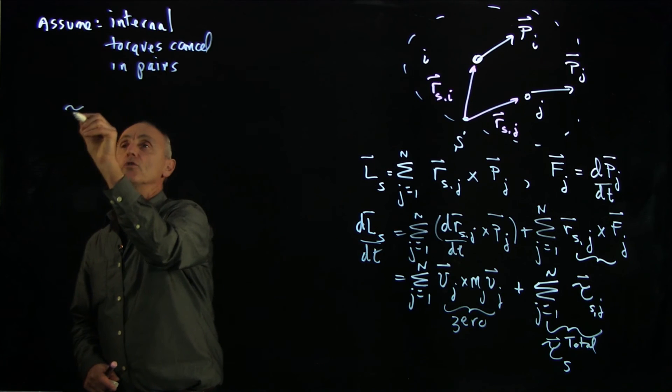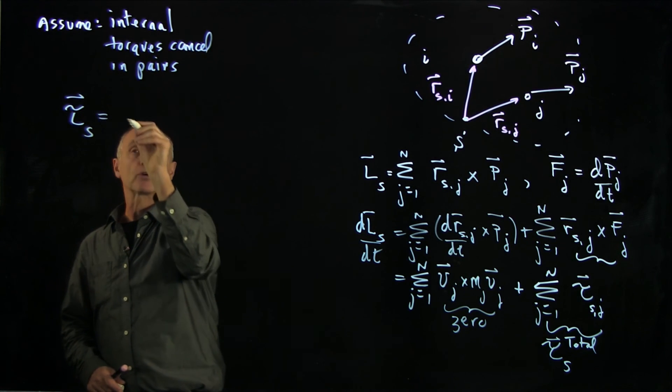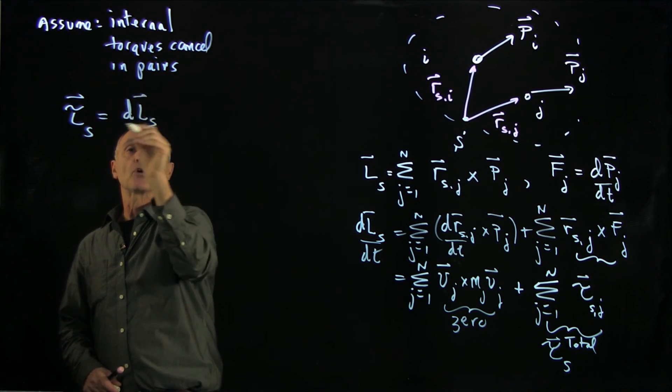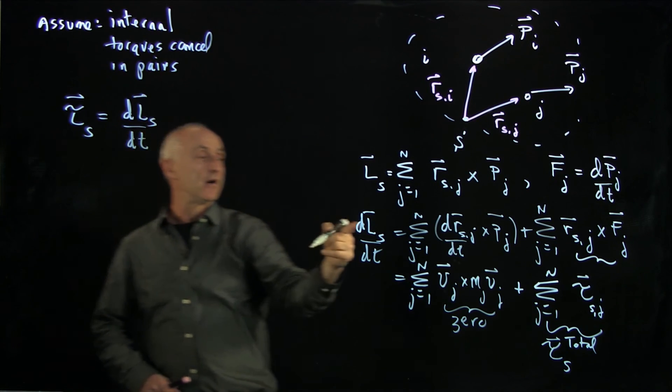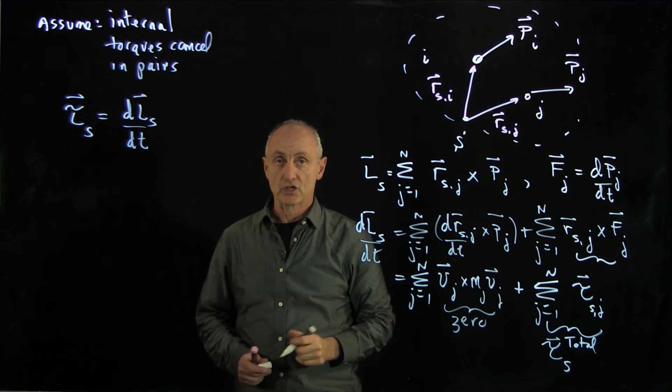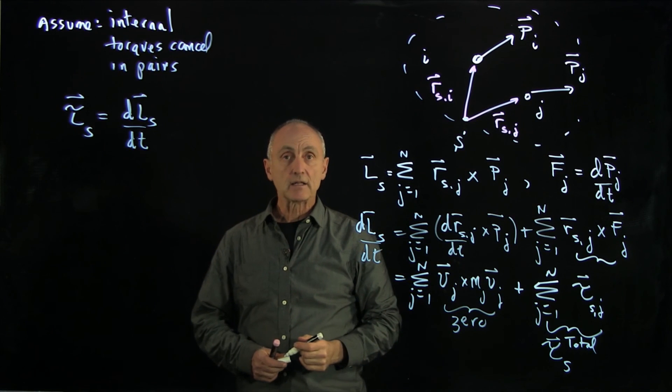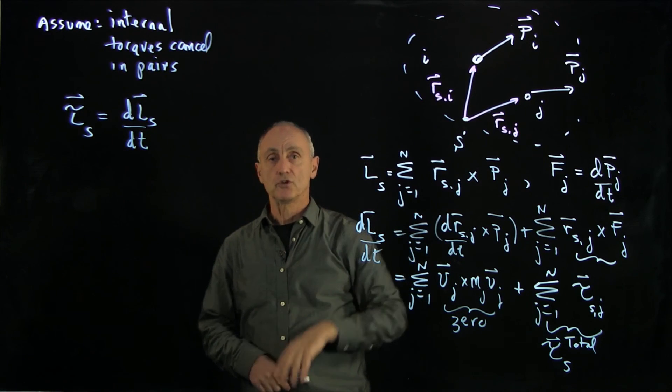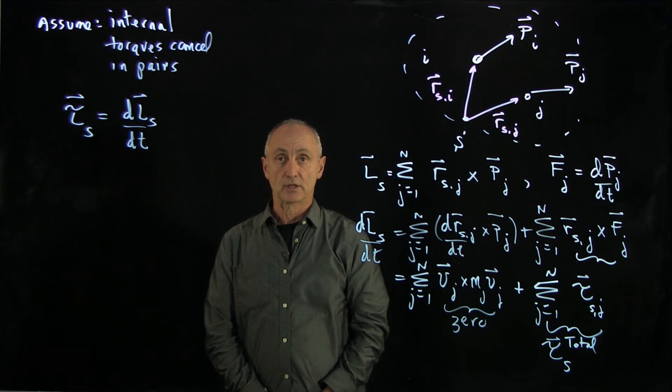And we'll conclude that the torque for our system of particles causes the angular momentum of the system of particles to change. The calculation is exactly like the single particle, with a few subtleties that have to do with internal torques canceling in pairs.